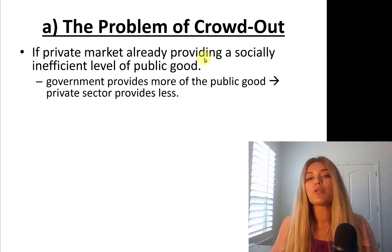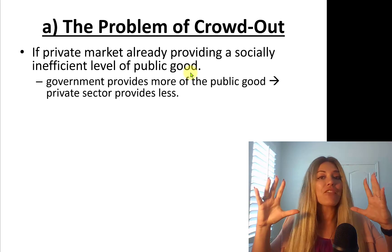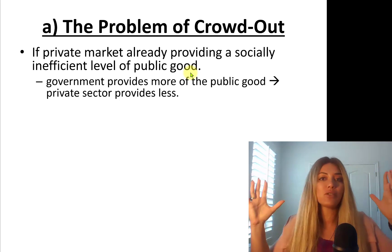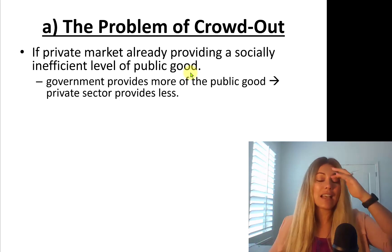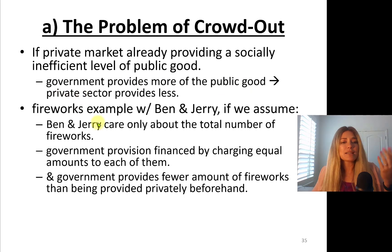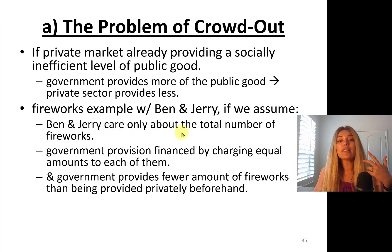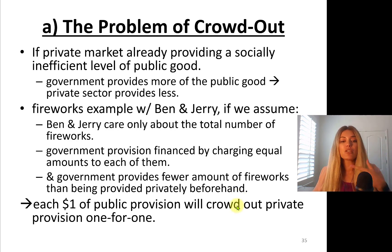The problem of crowd out: if the private market is already providing a socially inefficient level of public goods — say I'm a rich person providing a half-million dollar fireworks show every Fourth of July — and then government steps in and provides more of the public good, the private sector may start providing less. In the Ben and Jerry fireworks example, if government provides fewer fireworks than were being provided privately, each one dollar of public provision will crowd out private provision one-for-one under this model's assumptions.